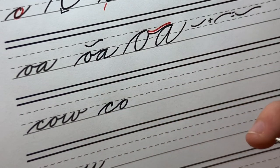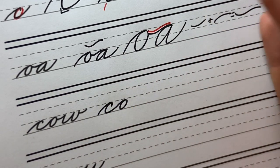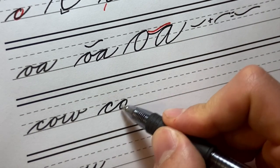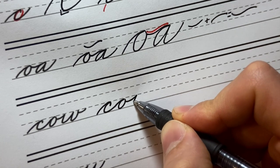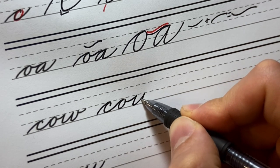Anytime you're exiting with an under curve, transitioning into an over curve, you're going to have that compound curve. Then after the O, I'm just going into my W from the top, just like that. And I'm finishing my W.